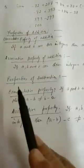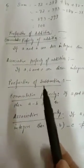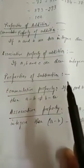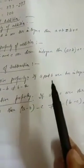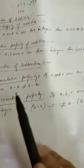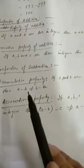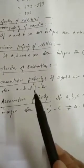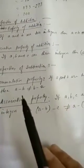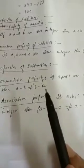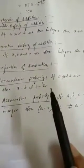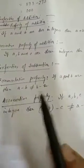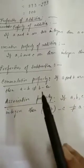Now, moving to the properties of subtraction. The first is the commutative property, which tells that if a and b are two integers, then a minus b is NOT equal to b minus a. So here you cannot subtract in any order — a minus b is not equal to b minus a. You cannot change the position.